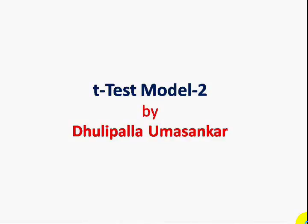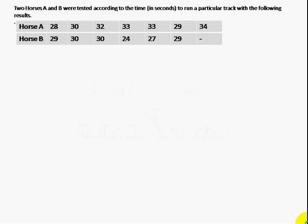Today we are going to discuss a t-test problem. Here he has given a problem regarding two horses. Two horses A and B were tested according to the time to run in a particular track with the following results.